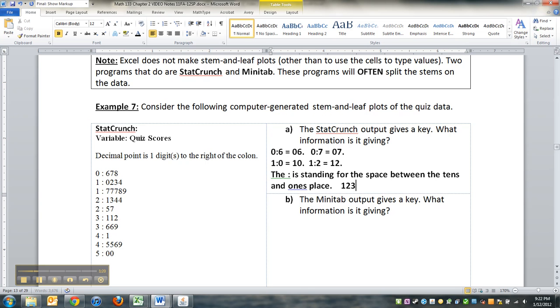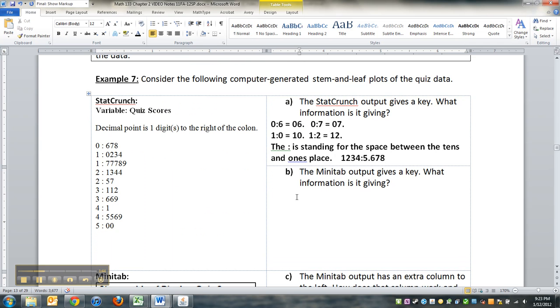And when you look at a number like one two three four five dot six seven eight for example, the five is in the ones place, the four is in the tens place. That colon is going where that space is in between the tens and the ones place. So the decimal point is one to the right of it. It's a really strange way to say it but that's how StatCrunch does it. So you might as well know how to read it.